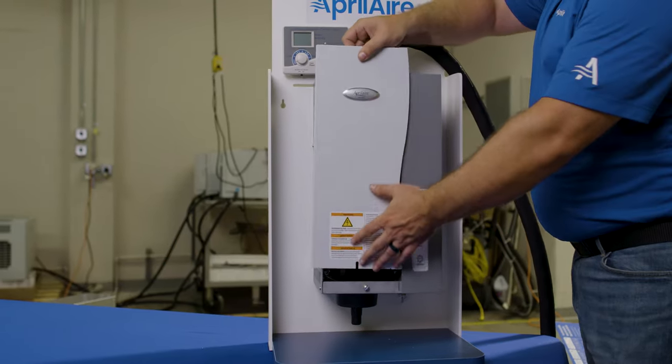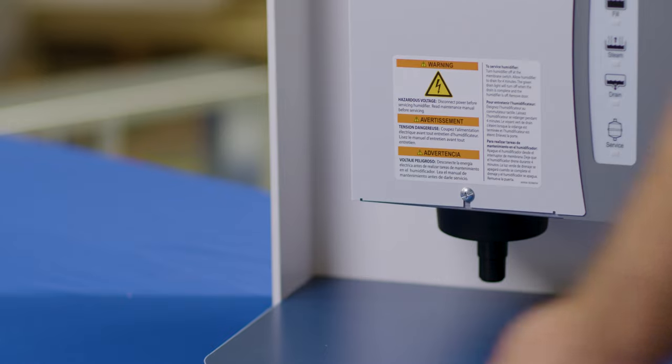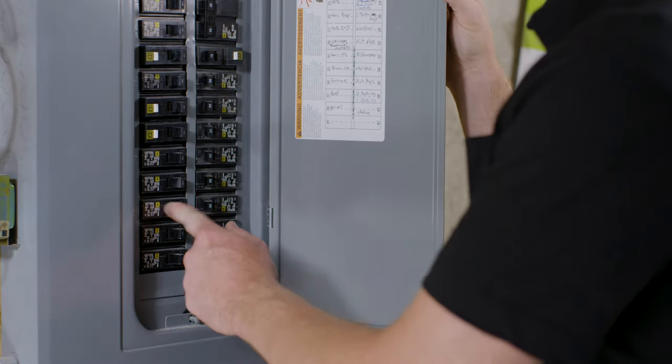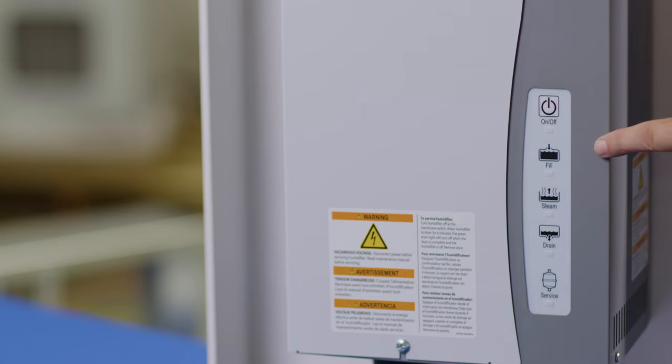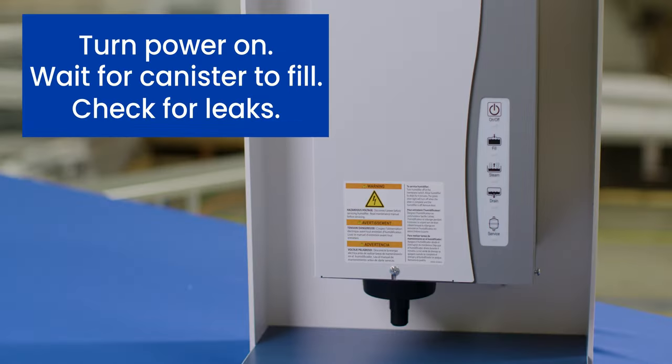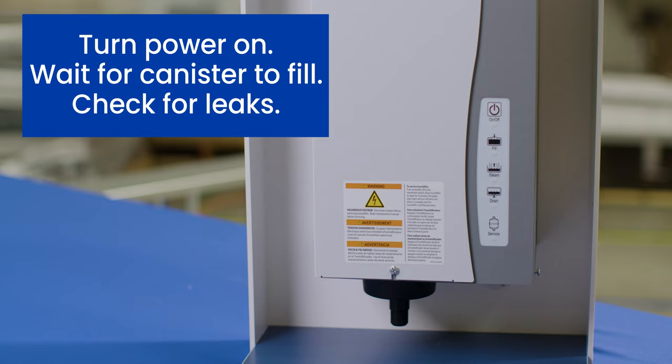Put the cover back on. Turn the power back on at the breaker. Turn the humidifier on and let it fill. After it's done filling, make sure there is no water coming out of the bottom of the unit and that the drain line is not blocked.